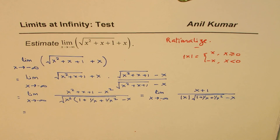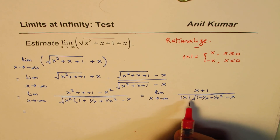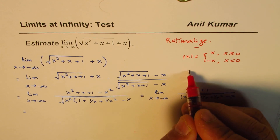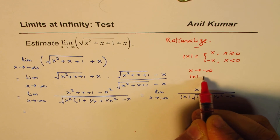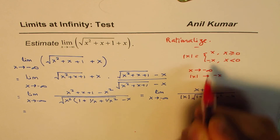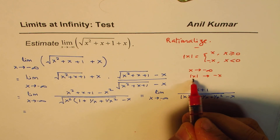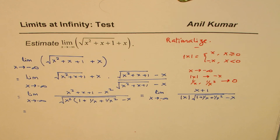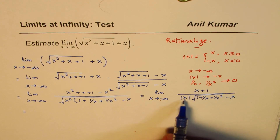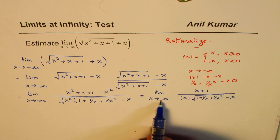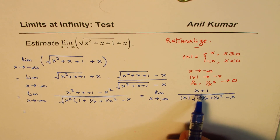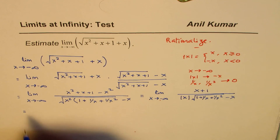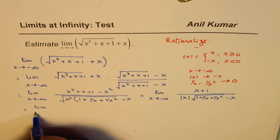So we will apply two things here: as x approaches minus infinity, absolute value of x can be taken as minus x since x is in the negative domain. Also, 1 over x and 1 over x squared both approach 0, since 1 divided by a large number approaches 0. And the numerator x plus 1 approaches x.